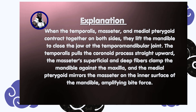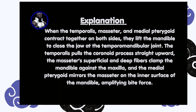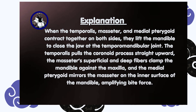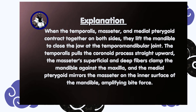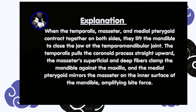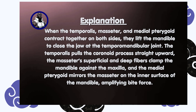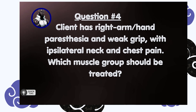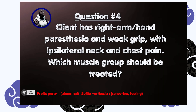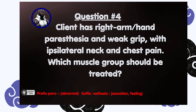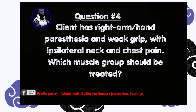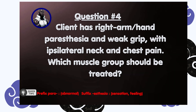The temporalis pulls the coronoid process straight upward. The masseter's superficial and deep fibers clamp the mandible against the maxilla, and the medial pterygoid mirrors the masseter on the inner surface of the mandible, amplifying bite force.